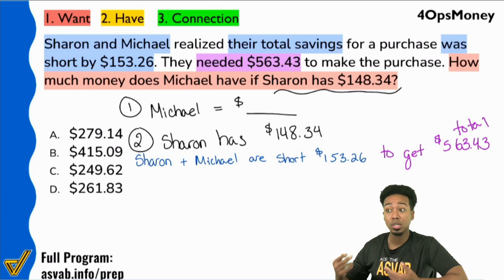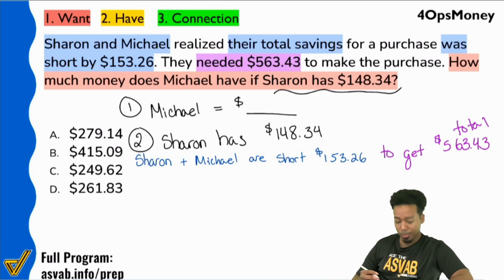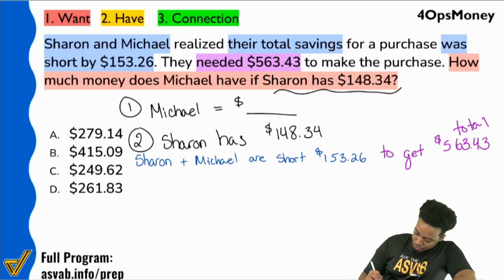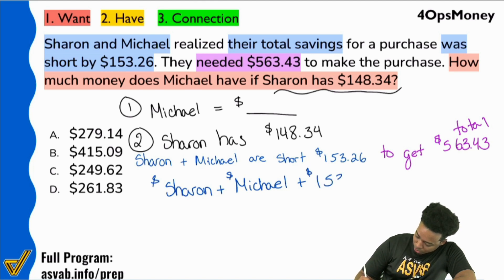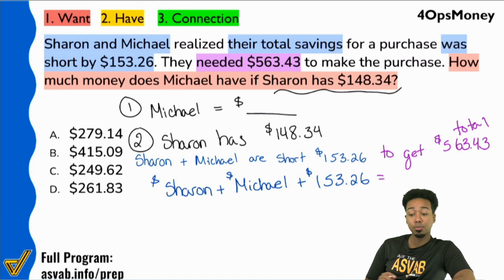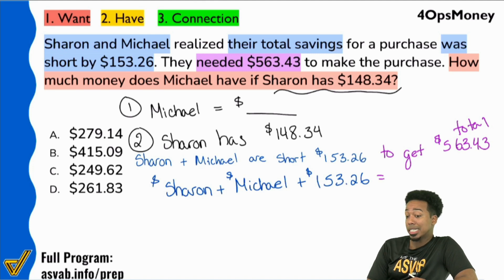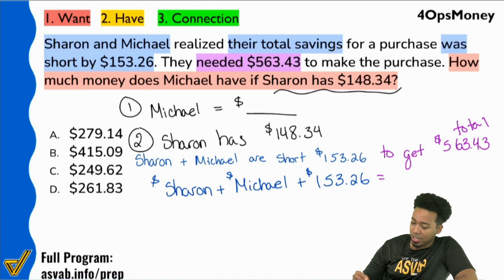If you want to, you could make an equation like this: Sharon plus Michael plus the $153.26 — those three things together are supposed to equal $563.43.